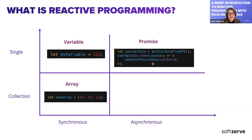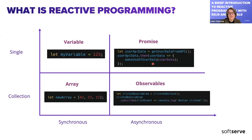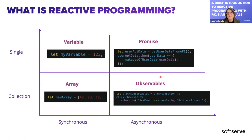For synchronous collections, we have arrays — a collection of data that is not happening at different periods of time. When we get an array, we get all the values synchronously. But with observables, we have collections of data that happen over a period of time. In contrast with promises, observables can emit more than one value — that's the key difference between a promise and an observable.